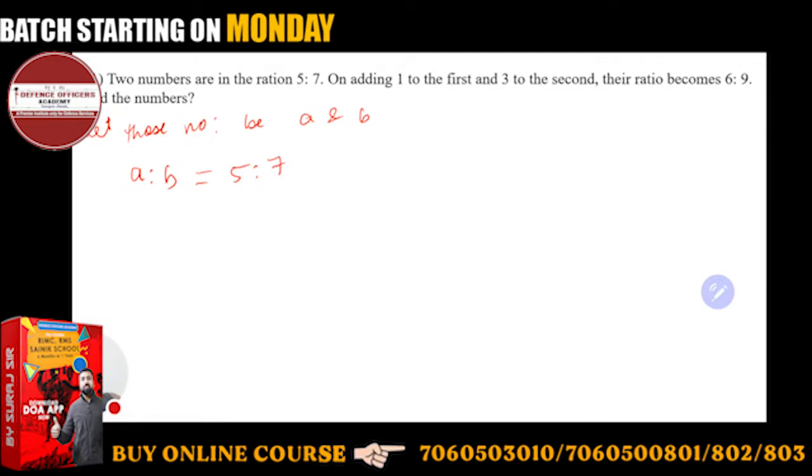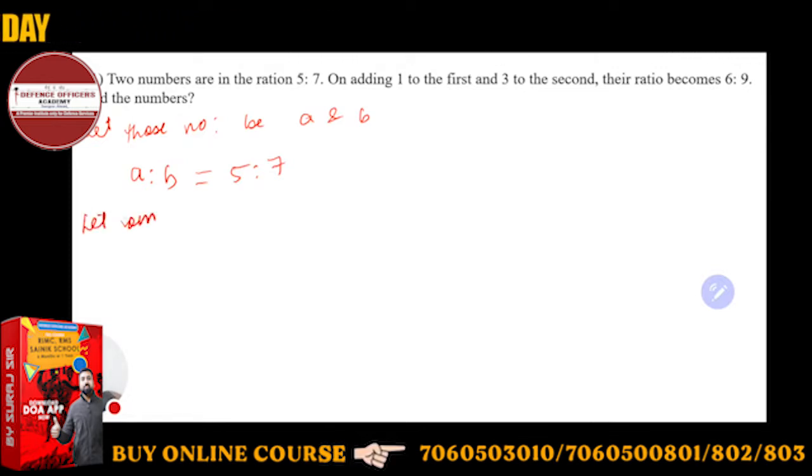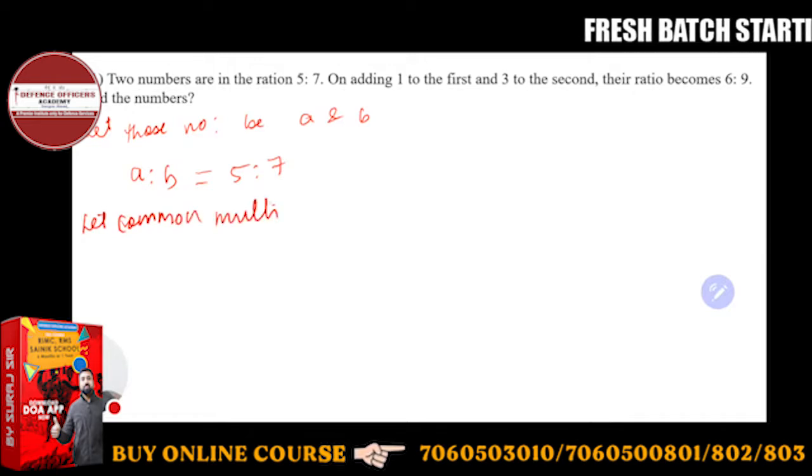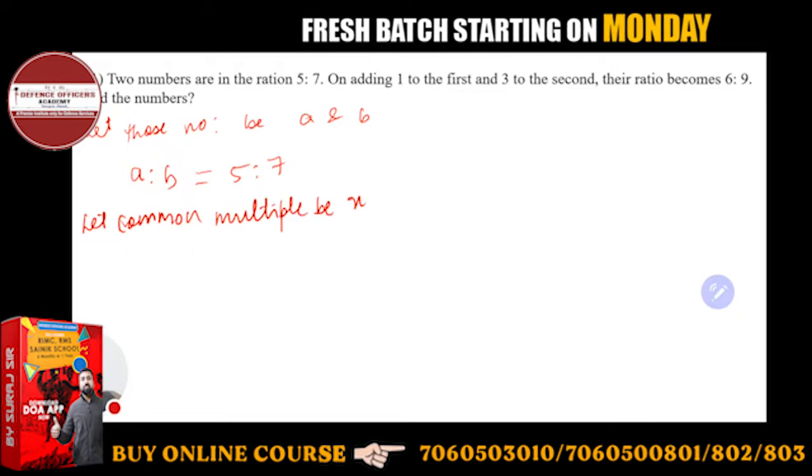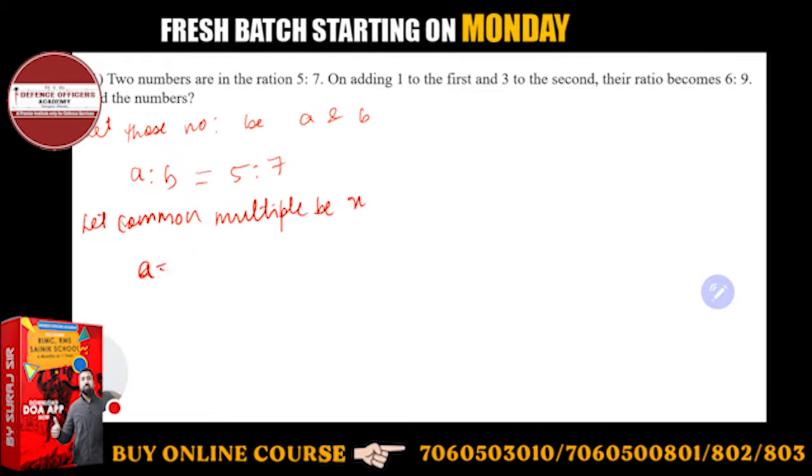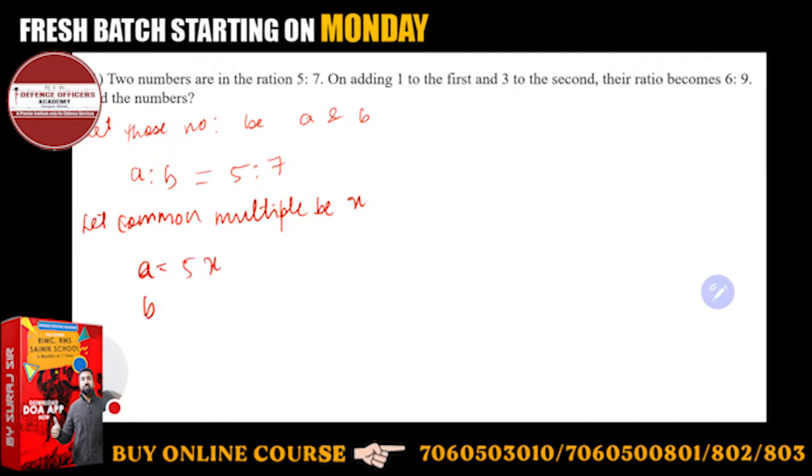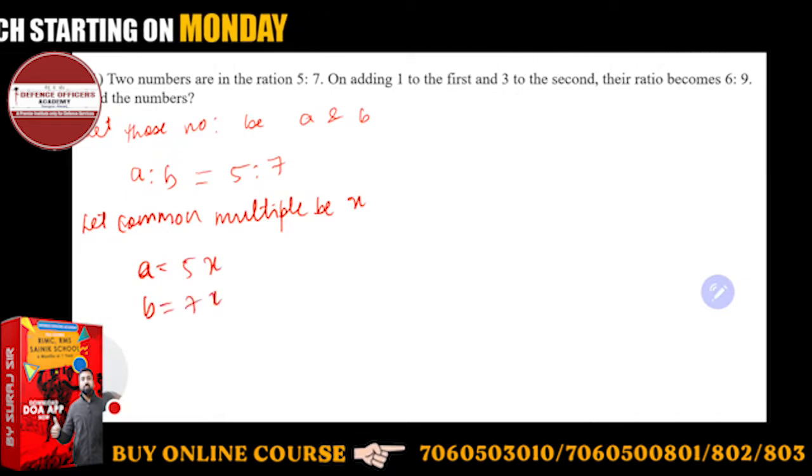Then what you have to do, you have to take common multiple. Let common multiple be x. So from here, a will going to come how much? 5x. And b will be 7x.